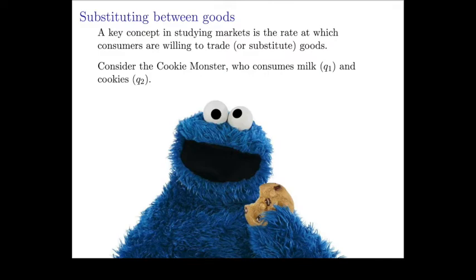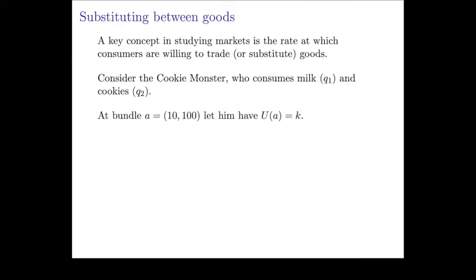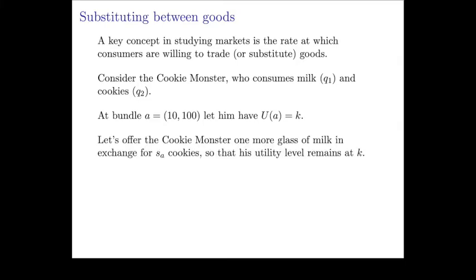Think of the Cookie Monster. He consumes milk and cookies. Good one is Q1, which is milk, and good two is cookies. Now think of the bundle A, where there are 10 cups of milk and 100 cookies. Let's suppose this gives him the utility K. Now suppose we offer Cookie Monster one more glass of milk in exchange for some number, let's say SA, units of cookies.